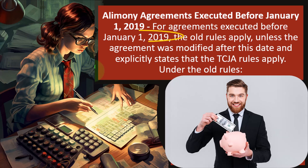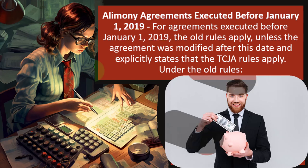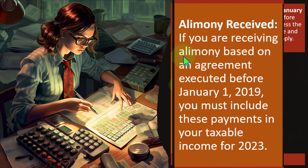For agreements executed before January 1st, 2019, the old rules apply unless the agreement was modified after this date and explicitly states that the TCJA rules apply. Under the old rules, alimony received: if you are receiving alimony based on an agreement executed before January 1st, 2019, you must include these payments in your taxable income for 2023. We have to understand this because there should be symmetry between the two partners — if one partner gets to take the deduction, they have an incentive to want to take it, and they're going to put the social security number of the person they paid on the tax return, just as an employer who wants the deduction for wages has to issue a W-2 to the IRS.